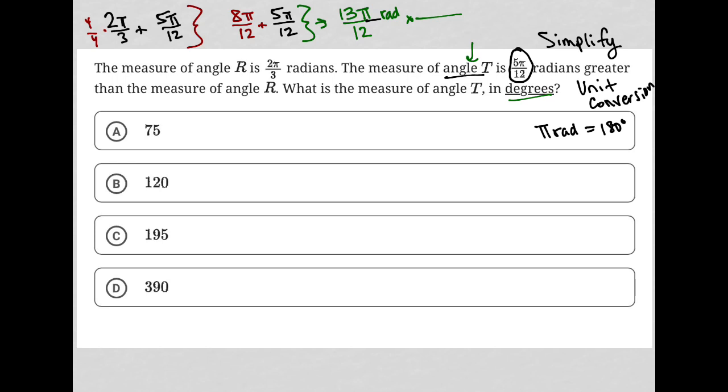I'm going to multiply that by my conversion factor, making sure to put the unit that I want to cancel out on the bottom so that it's diagonal here and it can be canceled, and the unit that I want to introduce on the top, 180 degrees.